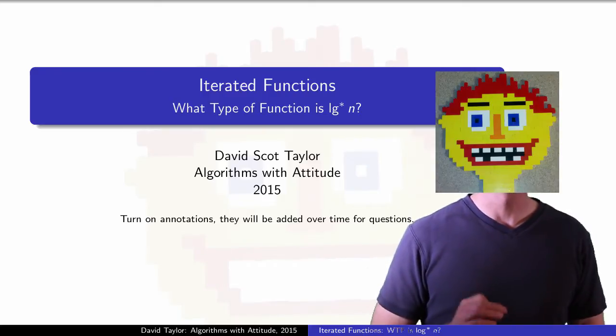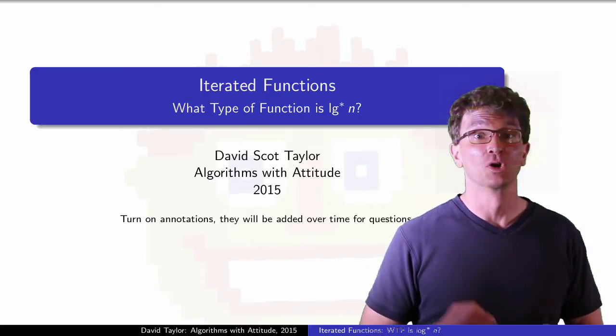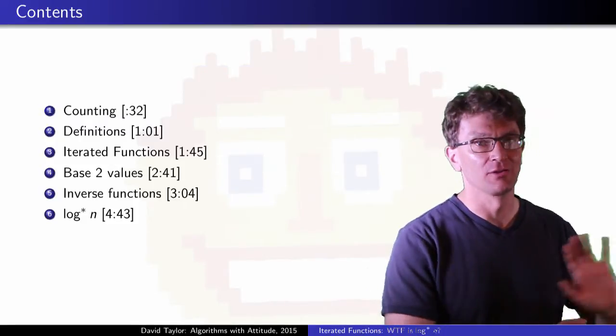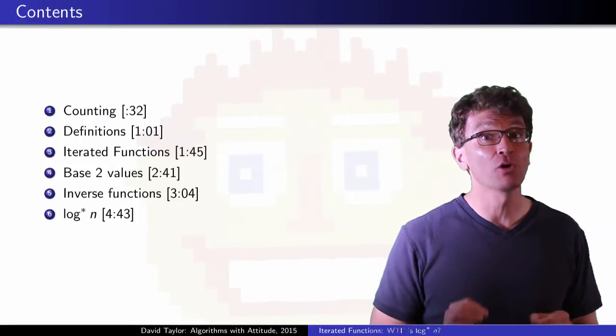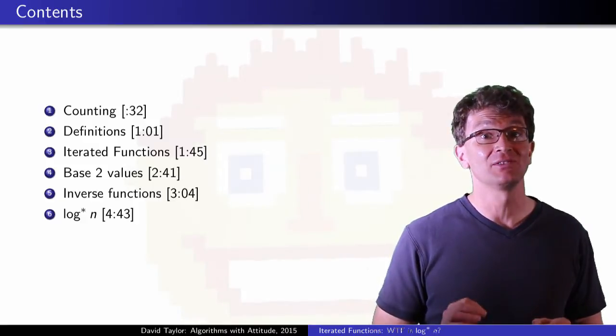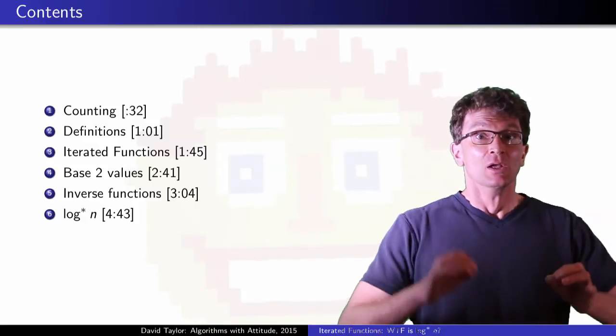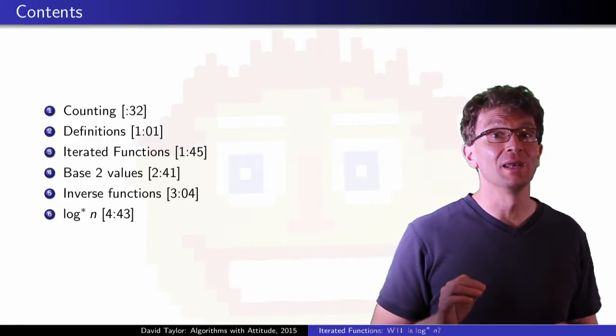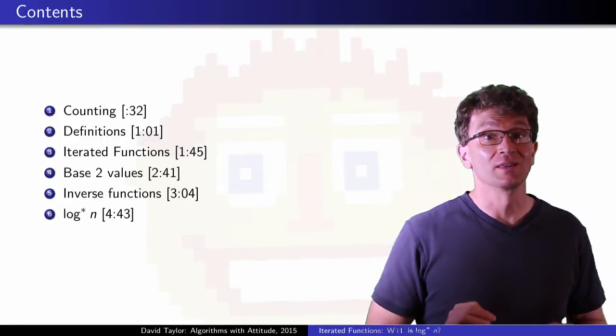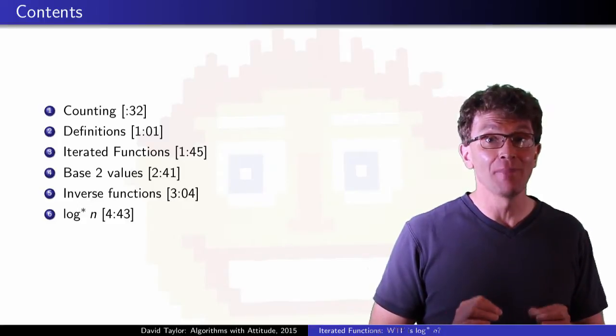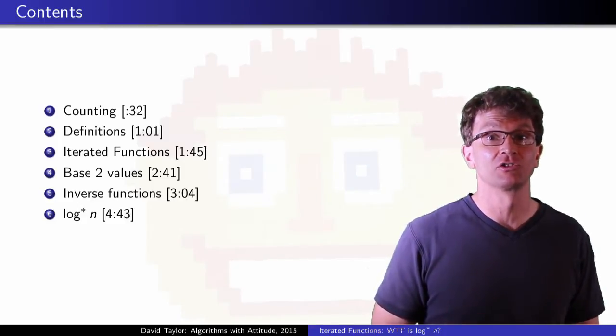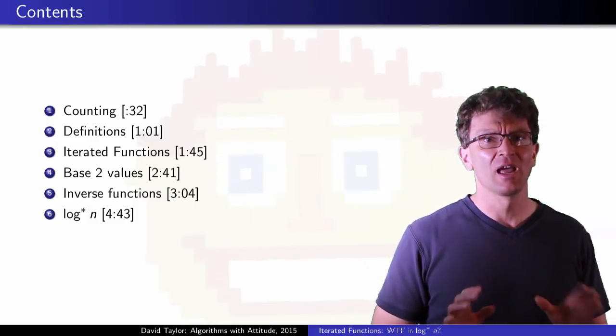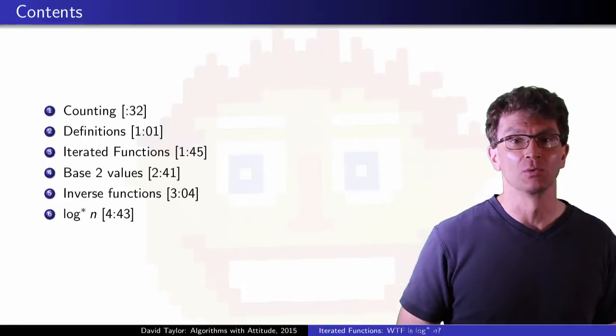This video is about iterated functions like the iterated logarithm, or log star function. If you just want to see that definition, jump to like the fourth minute of the video, but out of context, that definition might seem totally freaking random. You can understand what it is, but maybe not why we care. If you are willing to take a few minutes to get there, you will see that the log star function actually matches the pattern of other functions that we already know, if we deconstruct and reconstruct them first. That will make the next minute or two seem weird, but here we go.